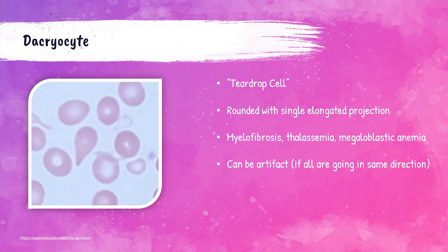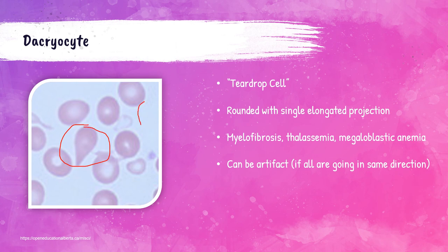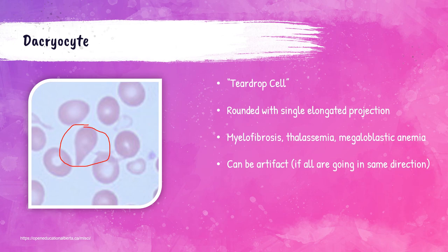Dacryocytes are also called teardrop cells — I can remember this name because there is 'cry' literally in dacryocyte, which helps me remember that's the fancy term for teardrop cells. These literally look like teardrops and can be seen in patients with myelofibrosis (a type of blood cancer), thalassemias, and megaloblastic anemias. If you're evaluating a peripheral blood smear and you see dacryocytes all going in one direction, this is likely an artifact, not true dacryocytes — the smear-making process can push red blood cells in the same direction. If they're in different locations or different directions, those are probably true dacryocytes.